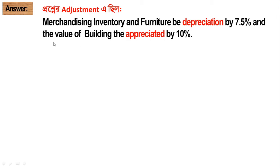The value of building appreciated by ten percent. In this case, inventory and furniture depreciation means the asset value is decreasing, so the asset is credited. When building appreciation occurs, the asset value increases, so the asset is debited. For depreciation, the asset is credited, and for appreciation, the asset is debited.